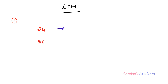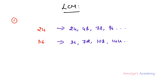We need to find out the first few multiples of these two numbers. Multiples of 24 are: 24, 48, 72, 96, etc. Multiples of 36 are: 36, 72, 108, 144, etc. Now we need to find out the least common multiple. We can see 72 appears in both lists and this is the least common multiple. Before that we can't see any common number, so the LCM of 24 and 36 is 72.